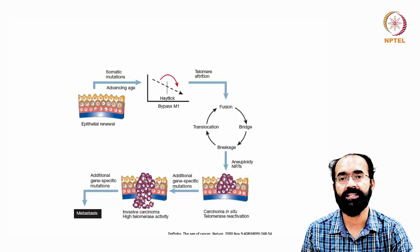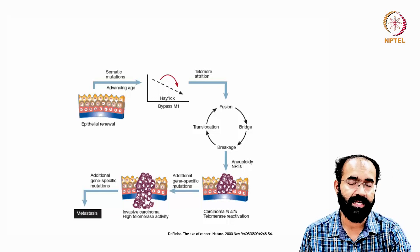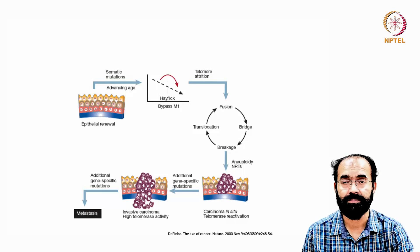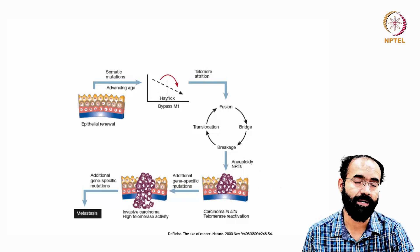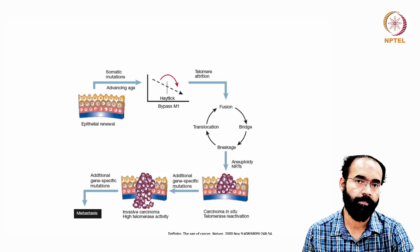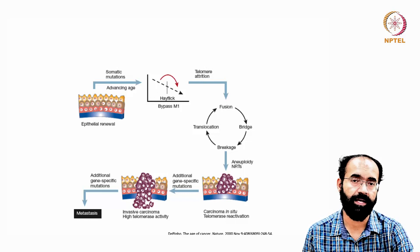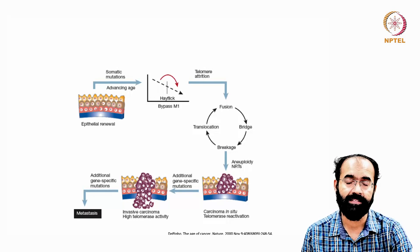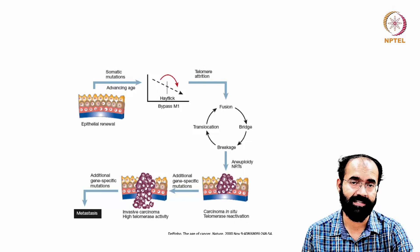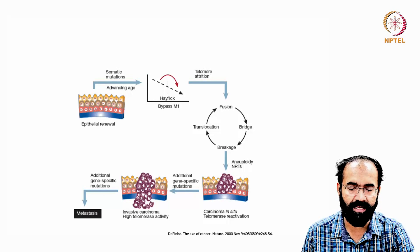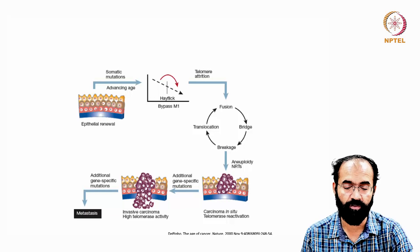Aneuploidy is a change in chromosome number. A normal healthy human cell has 23 pairs or 46 chromosomes. If 46 becomes 47 or 45, it is called aneuploidy — a change in chromosome number, either increase or decrease, both of which are problematic. This aneuploidy can trigger the formation of cancer.